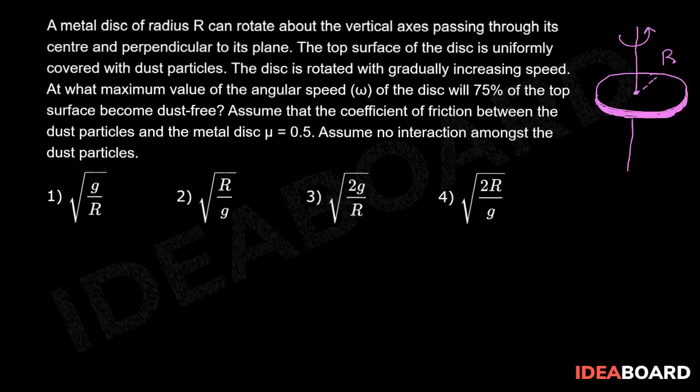Let us suppose this as the metal disc of radius capital R which is rotating about this vertical axis. The top surface of the disc is uniformly covered with dust particles.